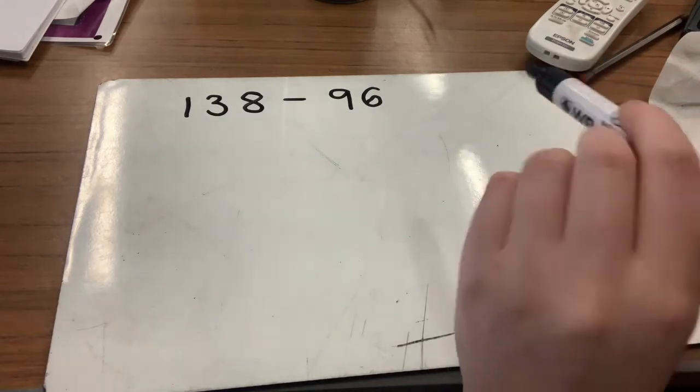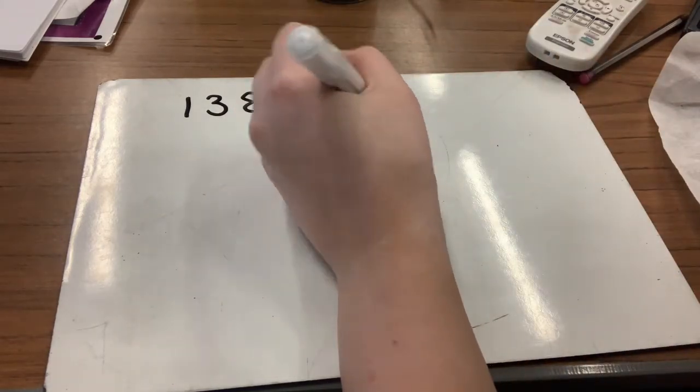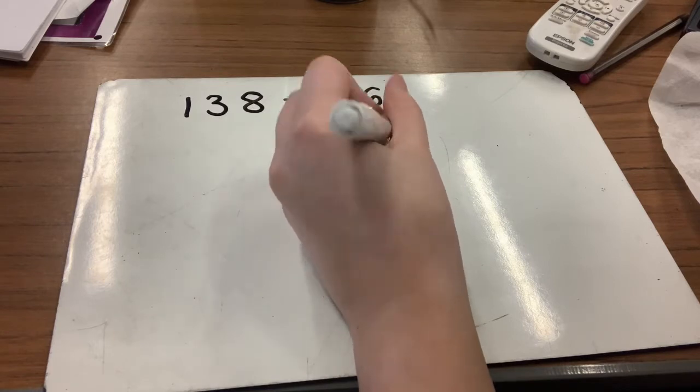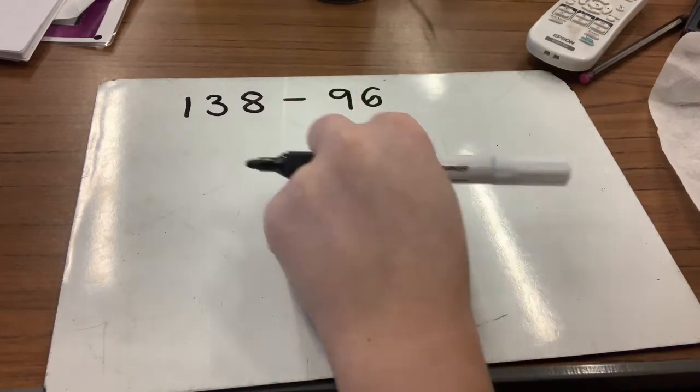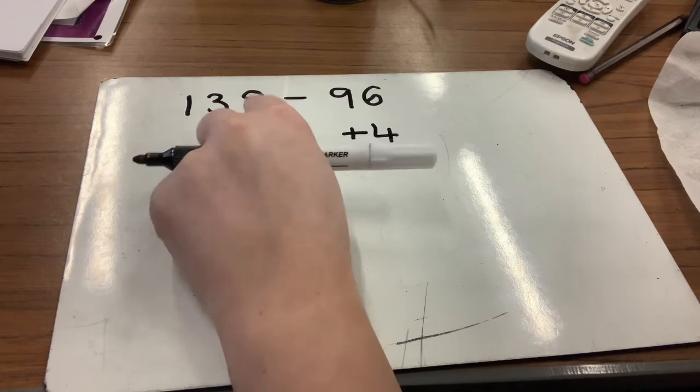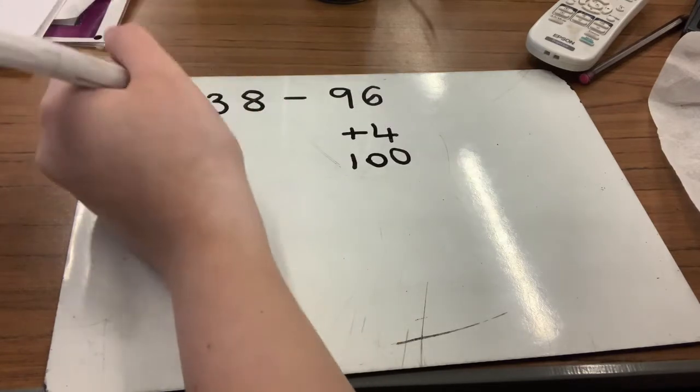So we're still doing exactly the same thing, we're just counting up from 96 to 138. I'm going to start off with my step one, which is to add on four units to take me up to the next 10, which would be 100. So now that I'm at 100, I have to add on however many more I need to get to 138, so I would add on three tens and eight units, or 38.